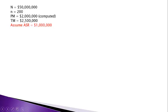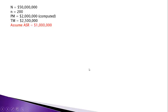When we take a sample of 200 out of 17,000 accounts and estimate that AR is off by $2 million, we don't think it's going to be off by exactly $2 million. We give ourselves a cushion — it might be a little more or a little less. That cushion is called the allowance for sampling risk. We'll see this graphically, and while the allowance for sampling risk and the sample size can be computed, in this example they are simply given so we can see how this works.